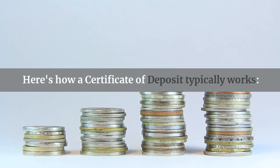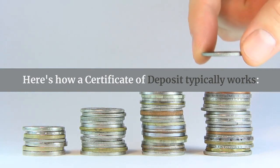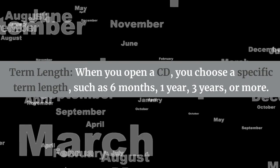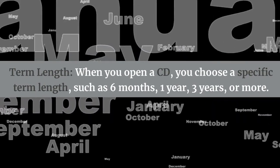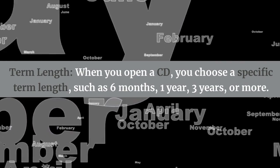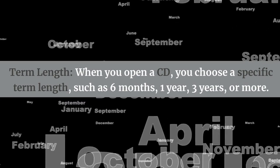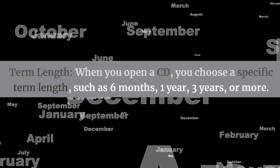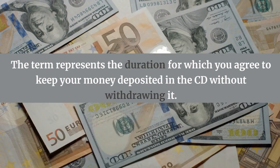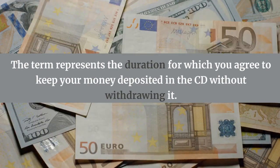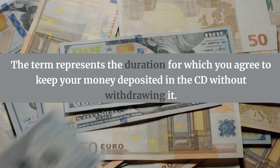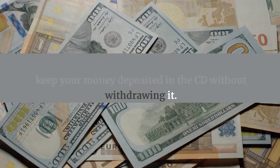Here's how a Certificate of Deposit typically works. Term length: when you open a CD, you choose a specific term length, such as six months, one year, three years, or more. The term represents the duration for which you agree to keep your money deposited in the CD without withdrawing it.